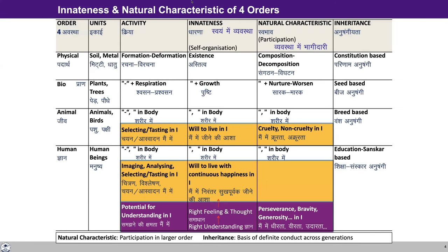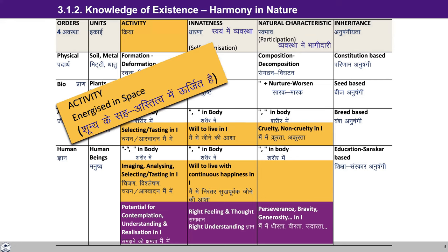So you must be acquainted with this table now. We are going to study about the innateness and natural characteristic of every order. We have studied this earlier also; I'll briefly recap and then we'll move ahead. The activity in every order of nature is basically by virtue of being energized in space. So every unit of every order is an activity in itself and is active with other units, and this is by being energized in space.